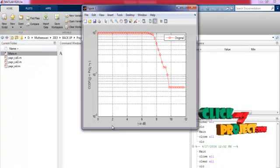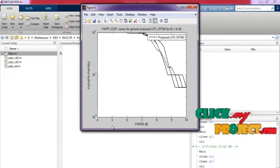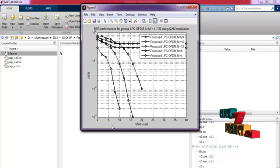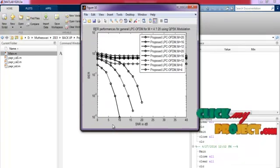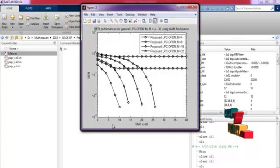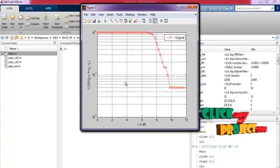Here, we can estimate the peak average power ratio detection by using linear predictive coding. Here, we obtain the performance graph for our process. This is the CCDF that is cumulative distribution function graph for our input signals.